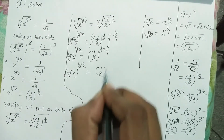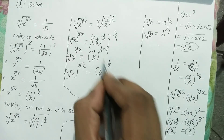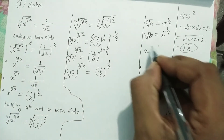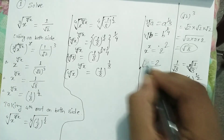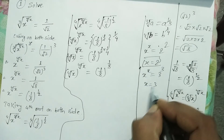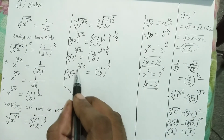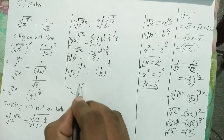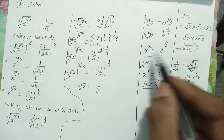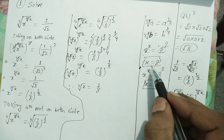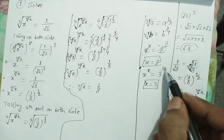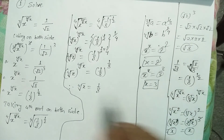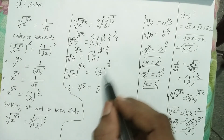Now we use the law of indices: if x to the power x equals 2 to the power 2, then x equals 2; if x to the power x equals 3 to the power 3, then x equals 3. In the same way, here fourth root of x raised to power fourth root of x equals 1 by 8 raised to power 1 by 8. Since the base and power are the same on both sides, fourth root of x is equal to 1 by 8.